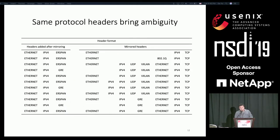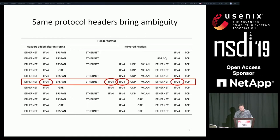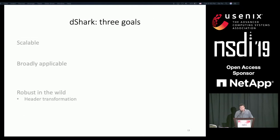Just to make things concrete again: in some of these hops, you can see there are four IPv4 layers. Usual tools are not prepared or designed to handle this ambiguity. Now we are ready to talk in detail about how we implement DShark and how we solve these challenges.